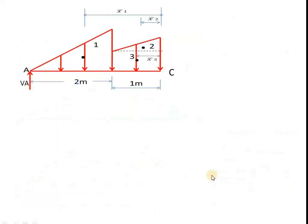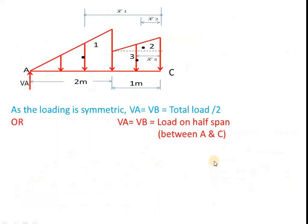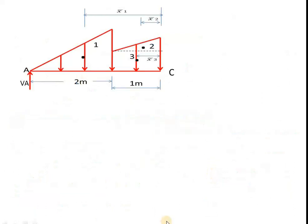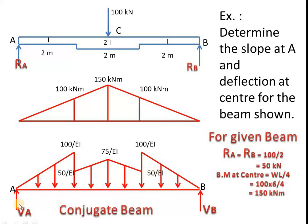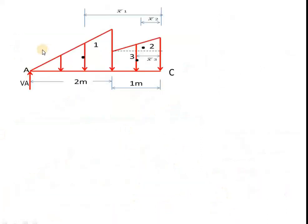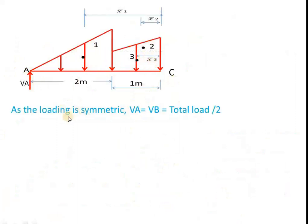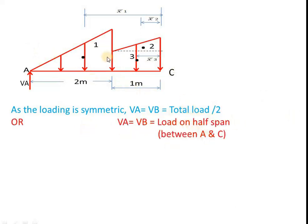To calculate the reactions for the conjugate beam, since the loading is symmetric, VA = VB = total load divided by 2. Equivalently, VA equals the total area on half the span, between A and C. We divide this area into two parts: one triangle and one trapezium (split into a triangle and a rectangle).